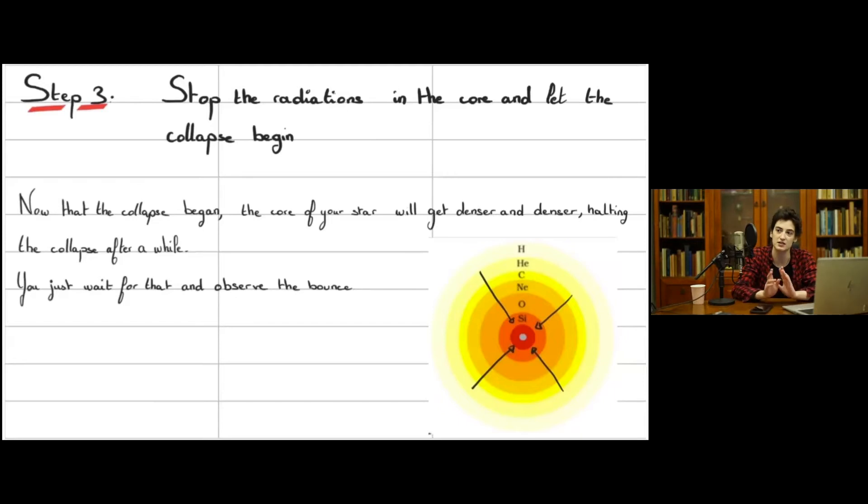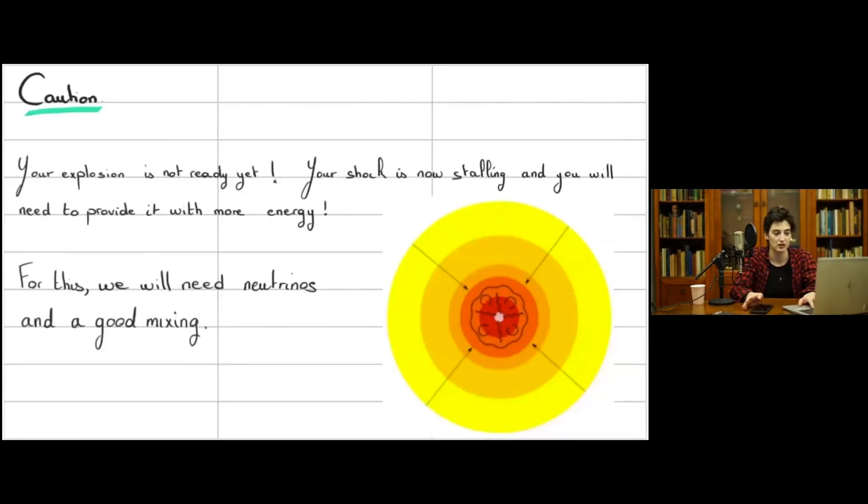So now you need the third step. Once you have a star that is at the latest stage of its life with a nice iron core, you need to stop the radiations in the core. As you cannot fusion iron, then the emission of radiation will stop. But how does the star stay itself, usually? It's a massive object, so it wants to collapse. The radiations are usually protecting the star from collapsing on itself. So if you stop the radiations, it will begin to collapse. So now, this part, you don't have anything to do. You just wait and observe.